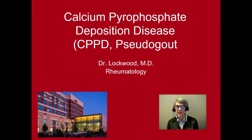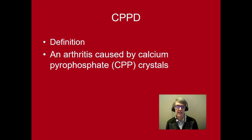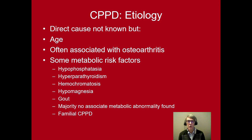Let's proceed with our discussion of calcium pyrophosphate deposition disease. Calcium pyrophosphate deposition disease is a type of arthritis caused by calcium pyrophosphate crystals deposited in the cartilage. We really don't know why people have it, but there are risk factors. It can occur more as people age. There seems to be an association with osteoarthritis, and we'll talk about this in a bit.